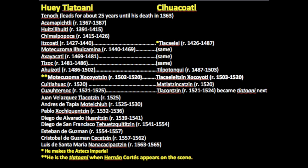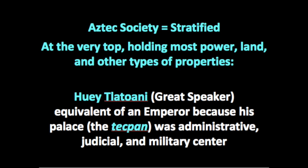Aztec society was very stratified. At the very top, holding the most power, land, and property — including tribute from conquered communities — was the Huey Tlatoani, the great speaker. This title was the equivalent of an emperor, and his palace, the Tecpan, was the very center of administrative, judicial, and military matters.